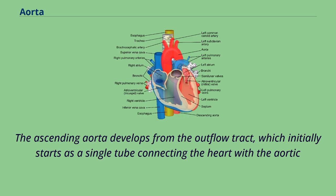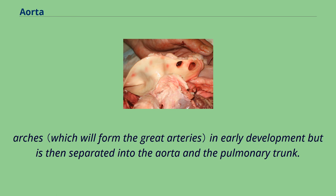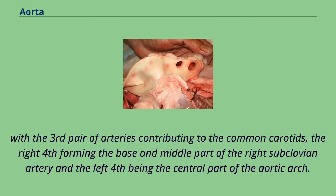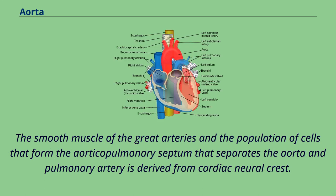The ascending aorta develops from the outflow tract, which initially starts as a single tube connecting the heart with the aortic arches in early development, but is then separated into the aorta and the pulmonary trunk. The aortic arches start as five pairs of symmetrical arteries connecting the heart with the dorsal aorta, and then undergo significant remodeling to form the final asymmetrical structure of the great arteries, with the third pair contributing to the common carotids, the right fourth forming the base and middle part of the right subclavian artery, and the left fourth being the central part of the aortic arch. The smooth muscle of the great arteries and the population of cells that form the aorticopulmonary septum — which separates the aorta and pulmonary artery — is derived from cardiac neural crest.